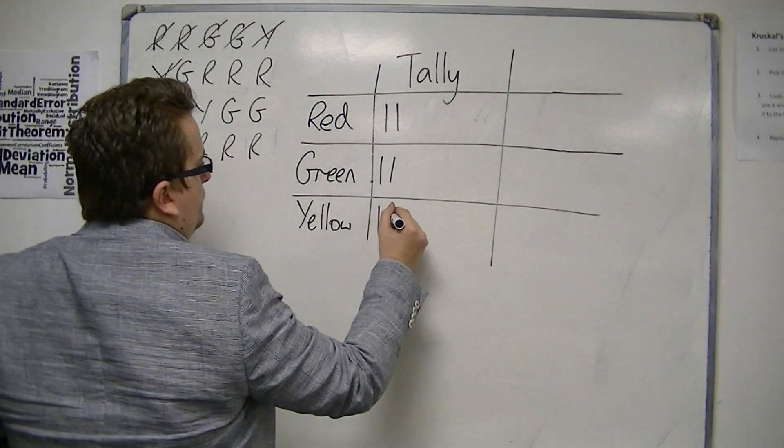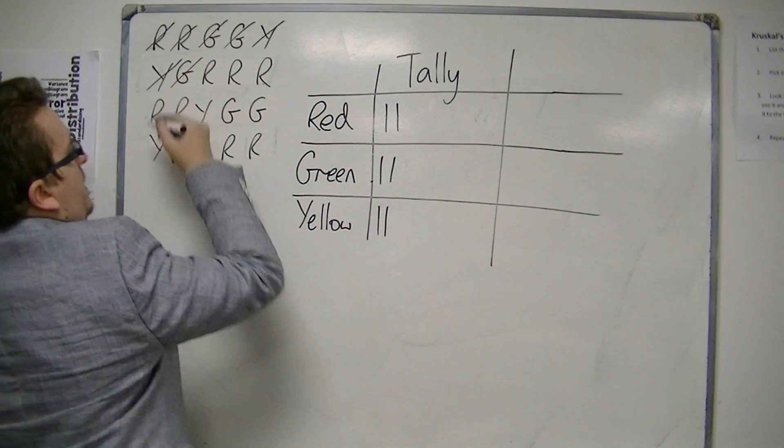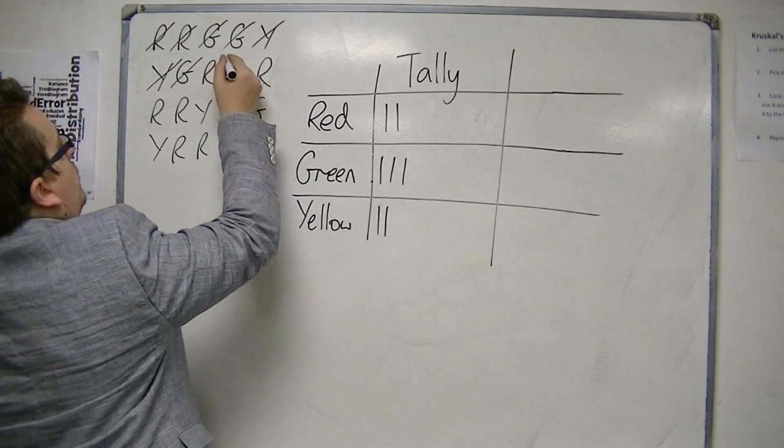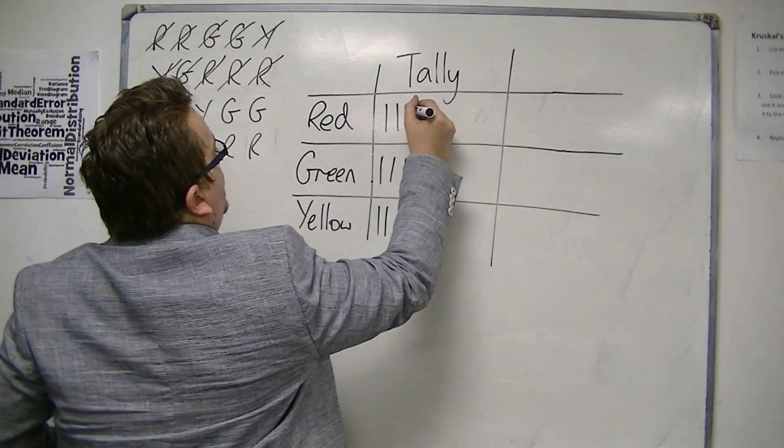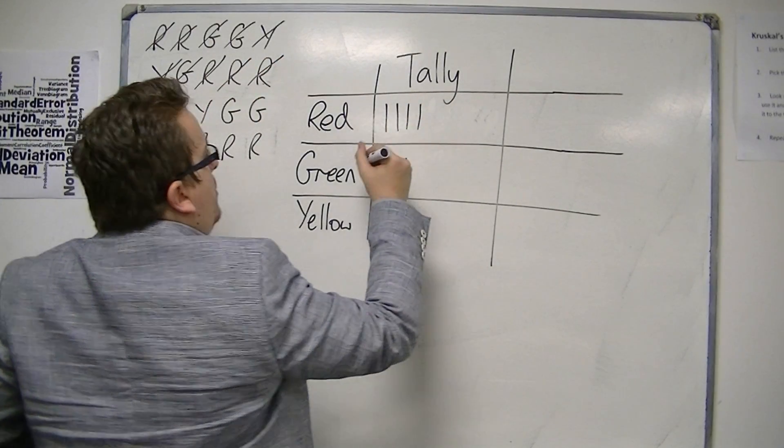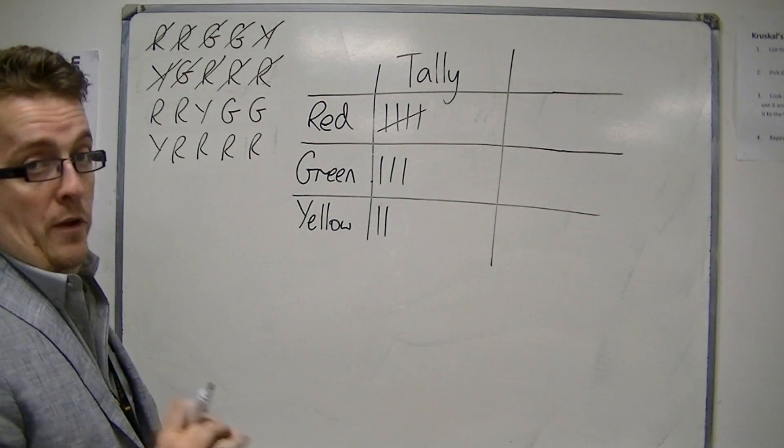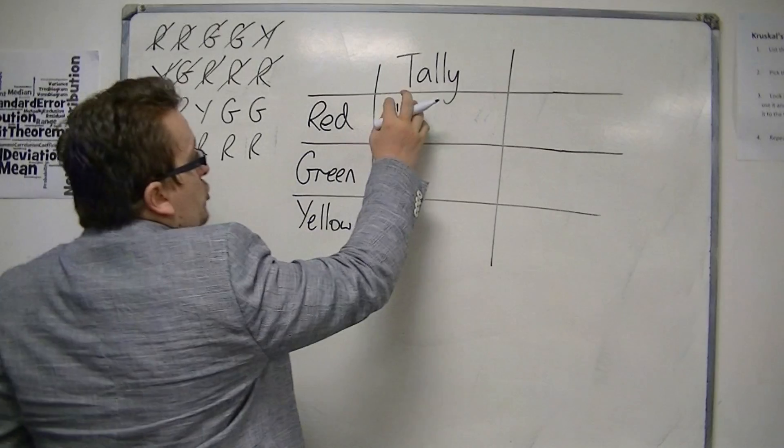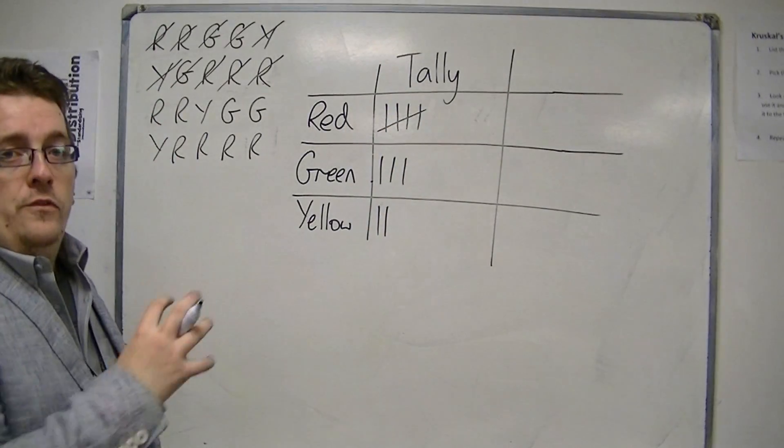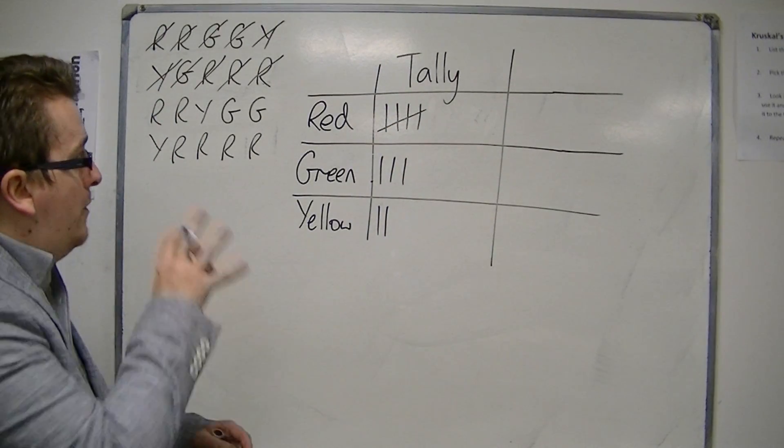Then I've got another yellow, then I've got a green, then I've got three reds. So I go one, two, and then when I reach five here, I put a diagonal line through the bunch. And it bunches up the five into fives, makes it very easy to count.